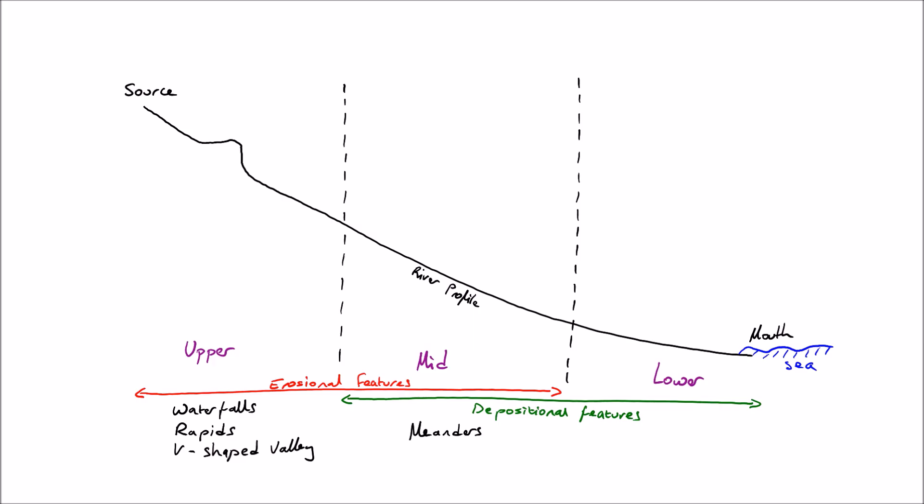In the mid part of the river we mainly get meanders. These are formed because the outer part of the bend is erosional and the inside of the bend is depositional. And you can see that the depositional features are deltas at the end.